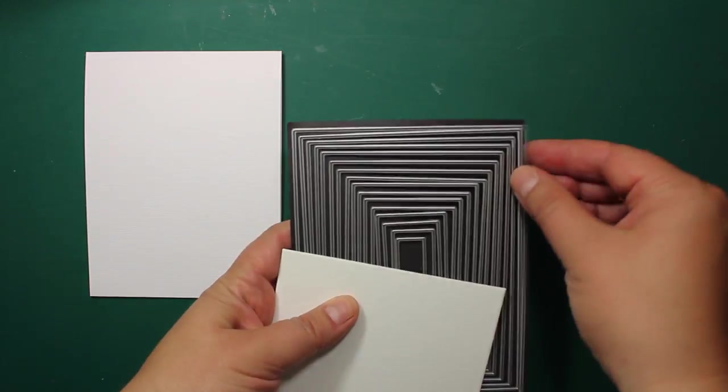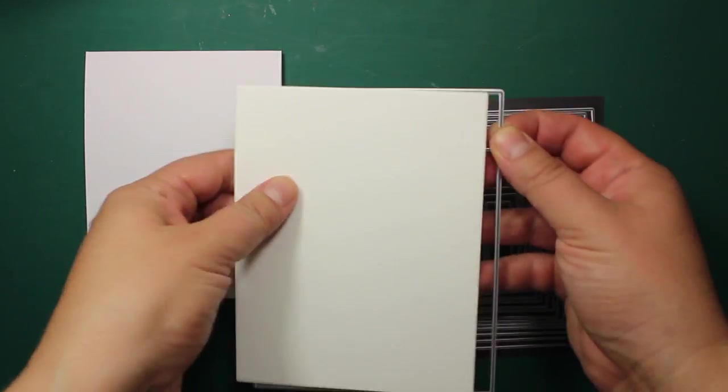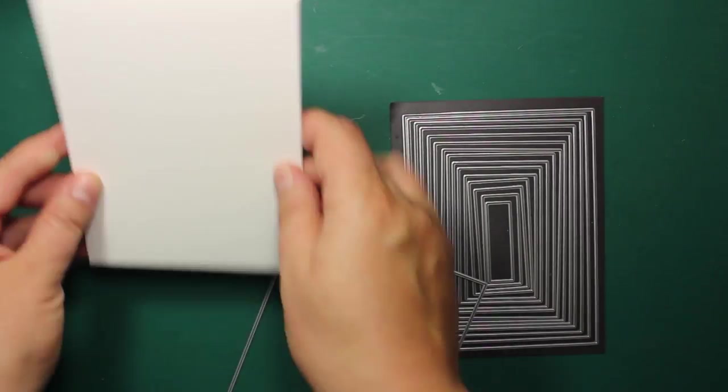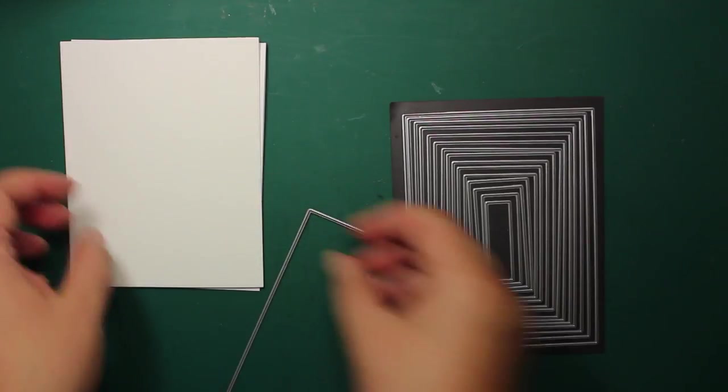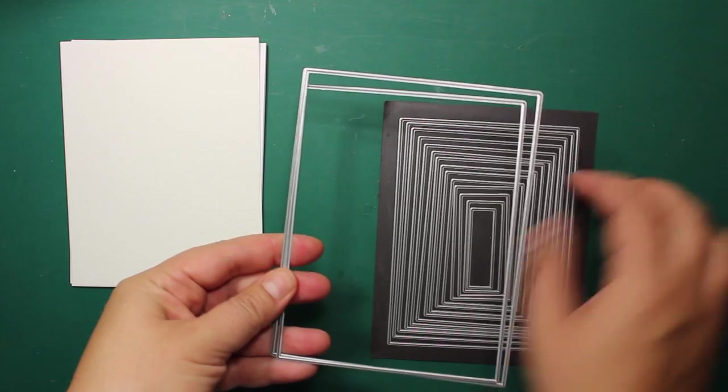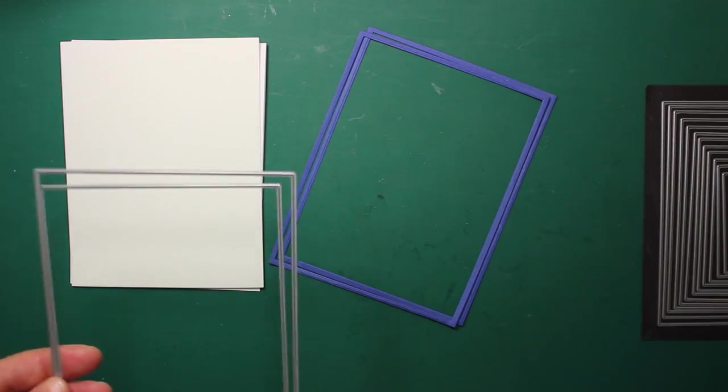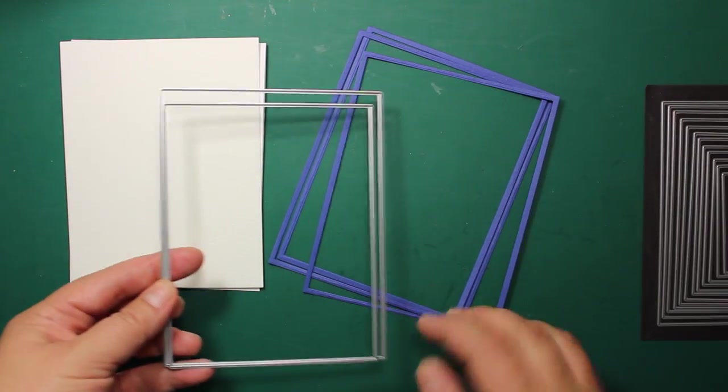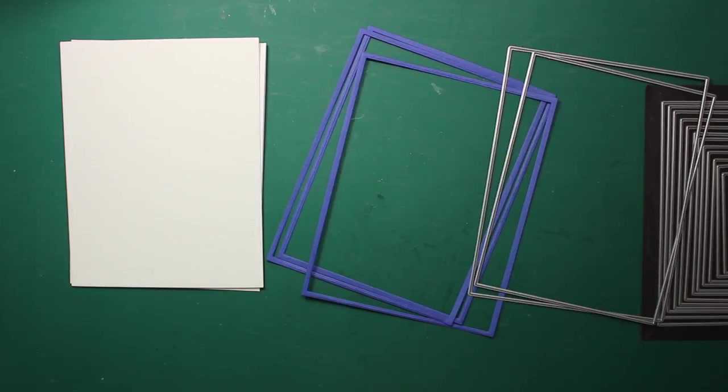First I have created a top folding 4.25 x 5.5 card base. Then I have used the largest die from Rectangle Basics die set by Memory Box to cut a panel of the same size out of watercolor paper. And then I have also used the next size die to create these three frames out of blue cardstock.